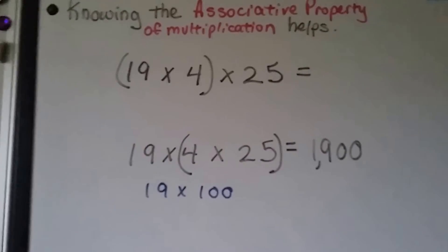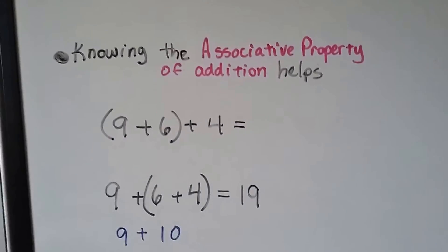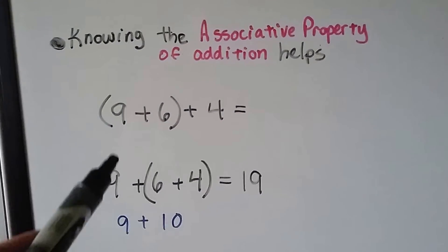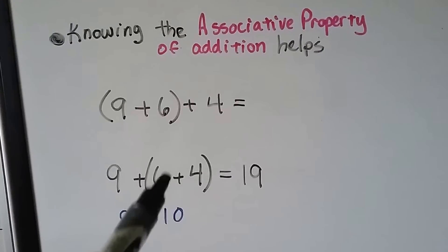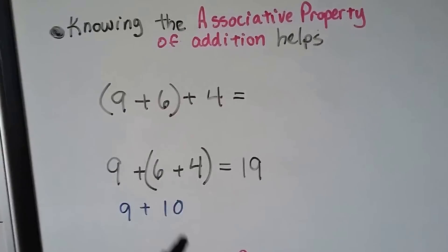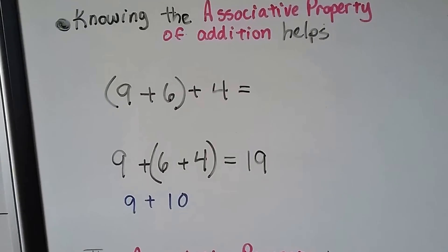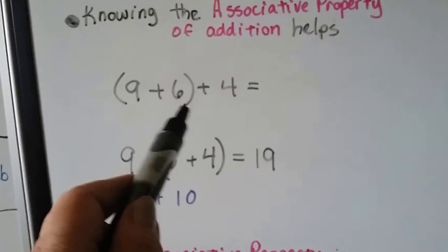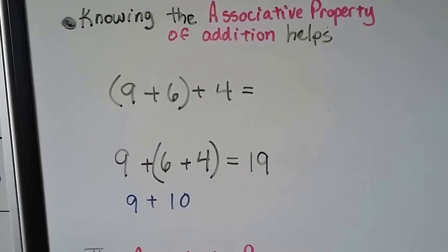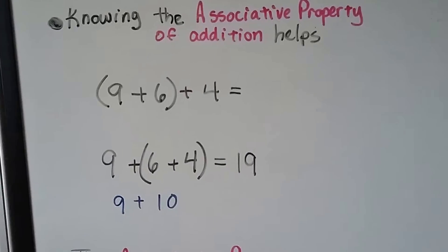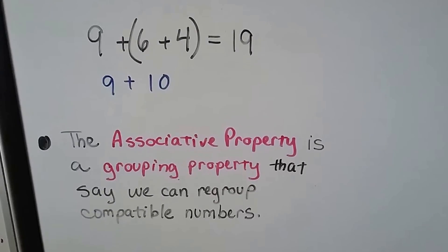The associative property of addition works the same way. If we have 9 plus 6 plus 4, we regroup the 6 and the 4 because they're more compatible — they make a 10. Then 10 plus 9 is 19. That's a lot easier for mental math. Since it's all addition, it doesn't matter which order we add or how we group it.